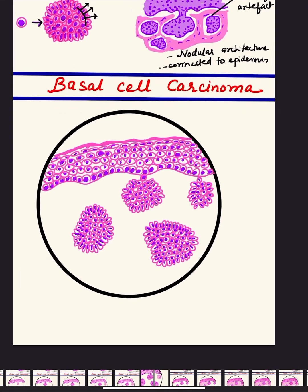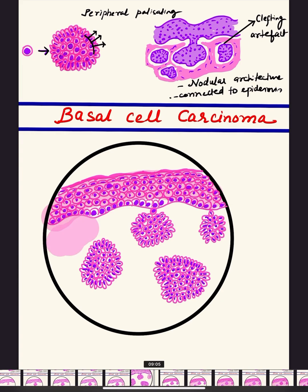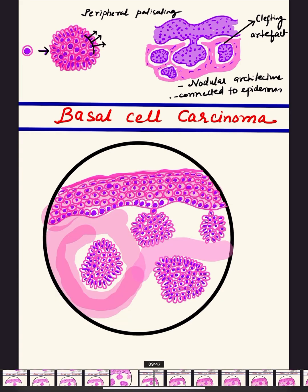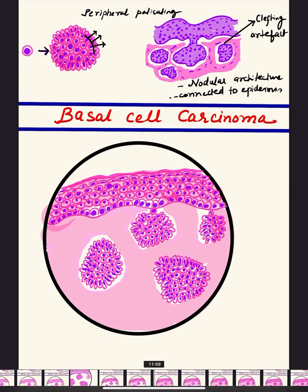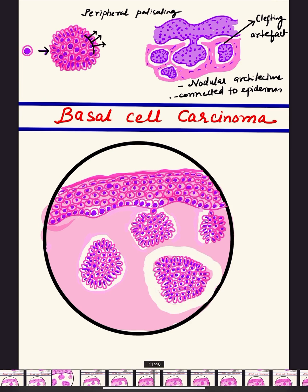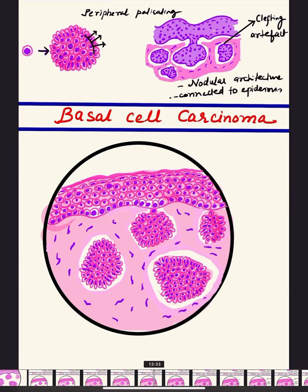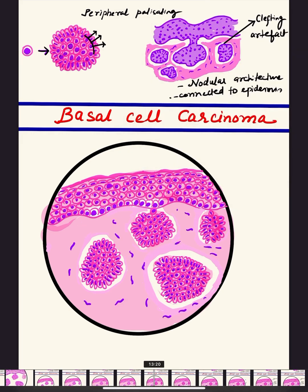Now we draw the stroma, which will show the clefting artifact. Around the tumor nodules there is a peritumoral clear area of clefting. We draw these clefts — the clear space around the nodules. In the stroma we can also draw fibroblasts. The stroma here is essentially the dermis.